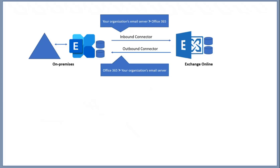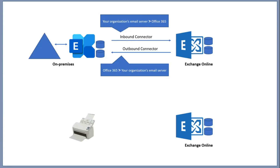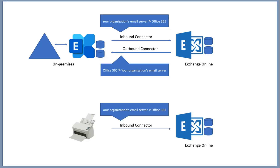The third scenario where you need Mailflow Connectors in Exchange Online is if all mailboxes are hosted in Exchange Online and you want to relay emails from a printer, an application, or any other device. In Office 365, there are three options to relay emails: client submission, direct send, and SMTP relay with connector. If you choose SMTP relay with connector, you need one inbound connector from your organization's email server to Office 365, and you do not need an outbound connector — only the one inbound connector is sufficient.